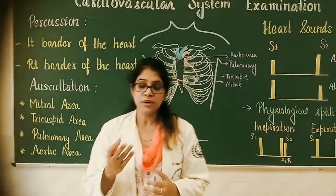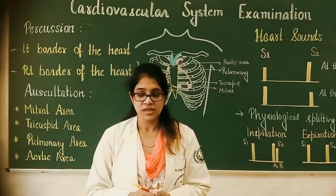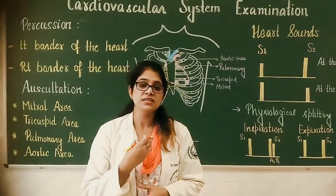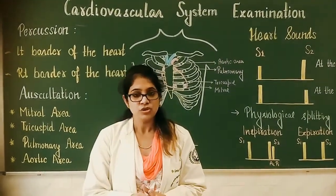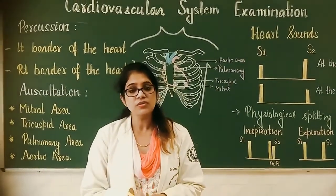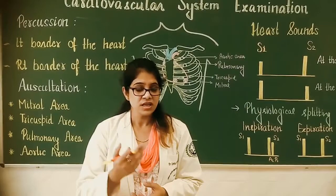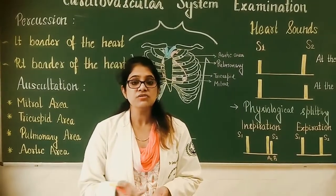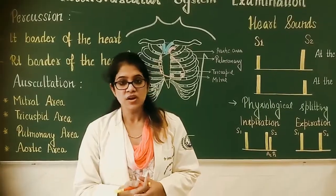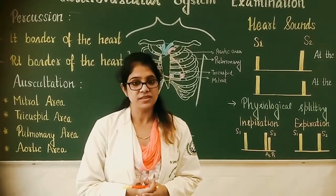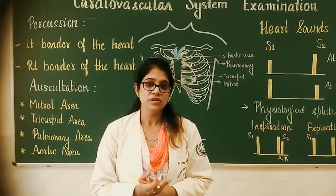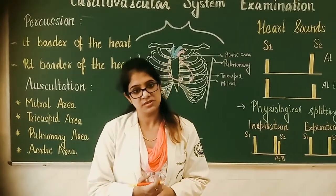Regarding the upper and lower borders of the heart: the upper border cannot be traced because the heart is connected with the great vessels, which also give a dull note. The lower border cannot be traced because it is in continuation with the diaphragm and the left lobe of the liver. So the lower and upper borders of the heart cannot be traced. This concludes percussion of the precordium for CVS examination.